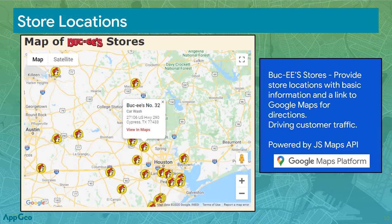The next example is a store location application. One of our customers, Buc-ee's stores, provides supersized gas stations primarily in the southern Texas area, with locations in Louisiana and Alabama. On their website they use the Maps JavaScript API — a very effective presentation of where their stores are located with symbols, brief info, and a 'View in Maps' button that takes you to consumer Google Maps to get directions. Very simple, very effective — it's all about driving customer traffic.